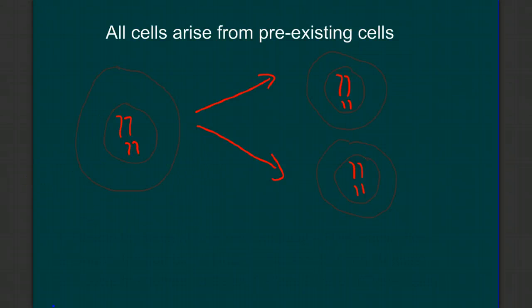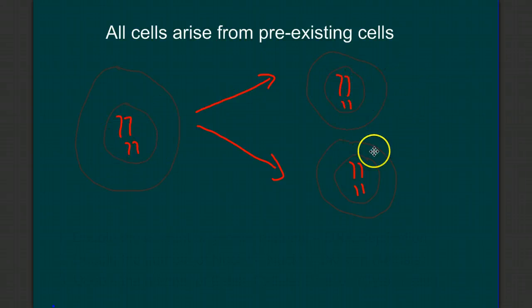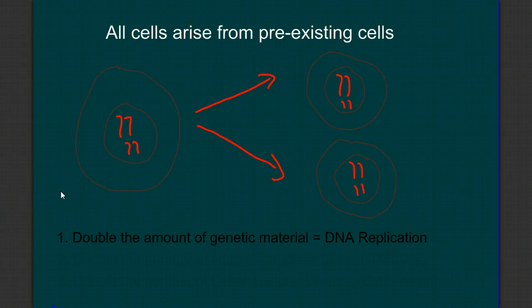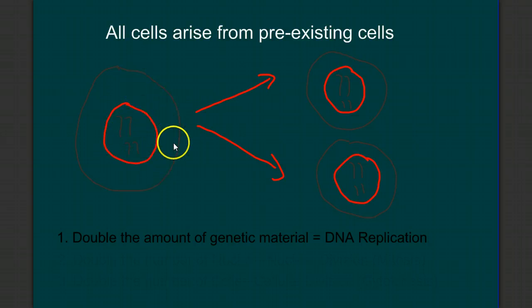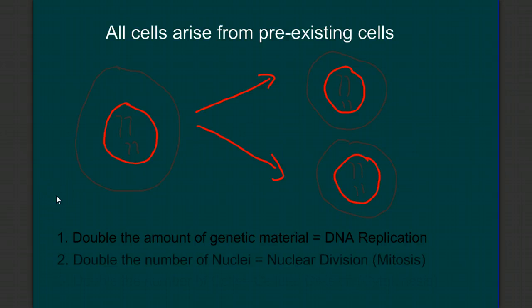First, let's look at just the genetic material. On this side, I have four chromosomes total, and over here I have eight chromosomes. So somewhere during this process, I'm going to have to double the amount of genetic material, or we're going to have to replicate our DNA. If we look at just the nucleus, on this side I have one nucleus, and on this side I have two nuclei. So we're also going to have to double the number of nuclei, or have nuclear division — in this case, mitosis.